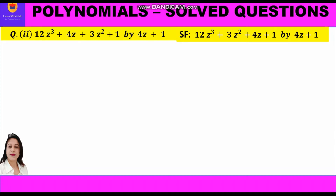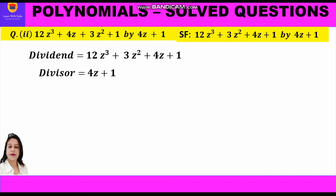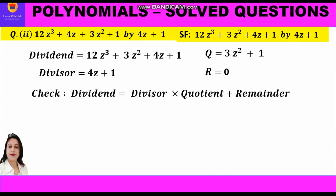Now let's check our answer using the division algorithm. Our dividend is 12z³ plus 3z² plus 4z plus 1, divisor is 4z plus 1, quotient is 3z² plus 1, and remainder is 0. We put these values into dividend equals divisor into quotient plus remainder: 12z³ plus 3z² plus 4z plus 1 equals 4z plus 1 into 3z² plus 1, plus 0.